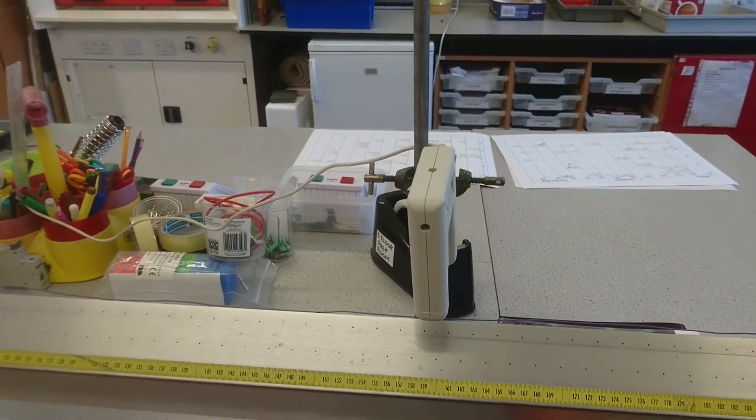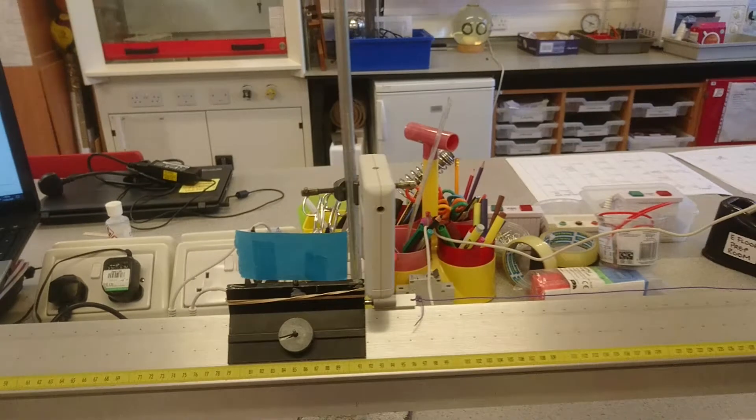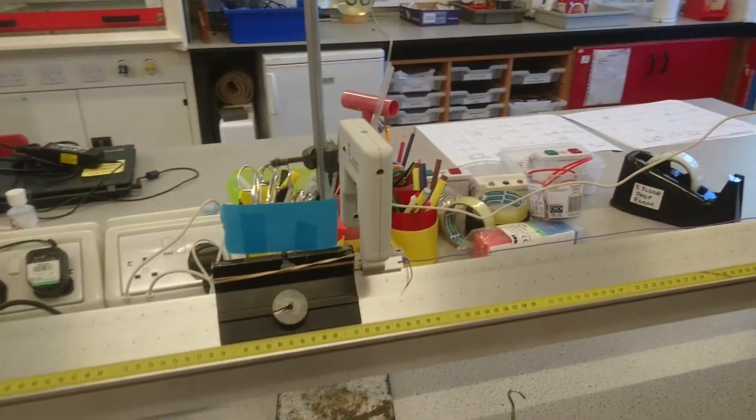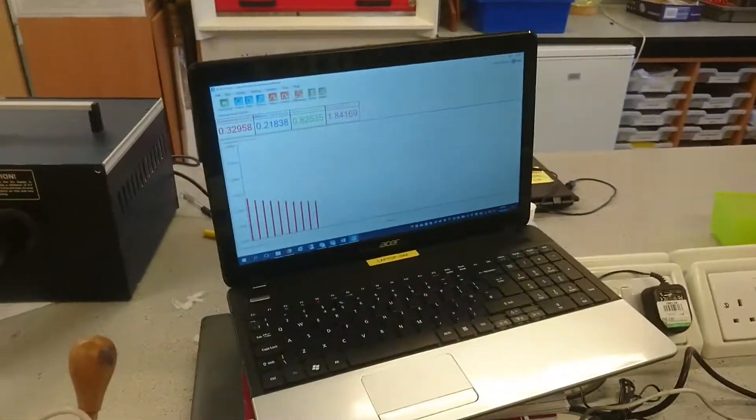And then these light gates, along with the card, measure the velocity at each section. Using the velocity and the time between each, the computer can then calculate the acceleration.